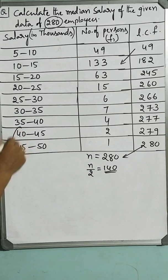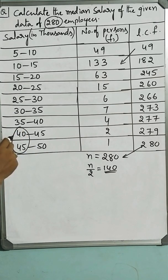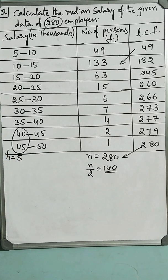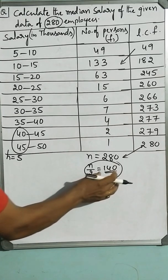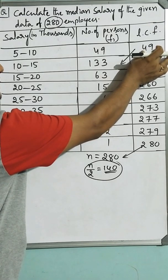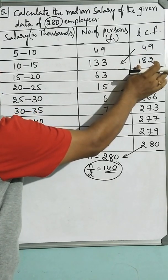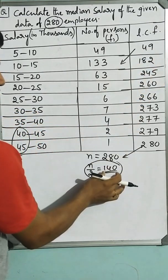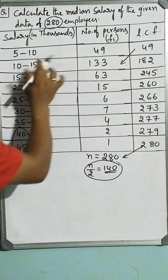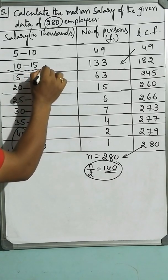As usual, difference of two successive limits, either lower limits or upper limits give you class height, that is 5 and this n by 2 value tells you what is median class. Where does this 140th person falls? In which class? Let us see. Up to 49 persons are covered to 182. 182 means you have already covered 140 and 141st person.